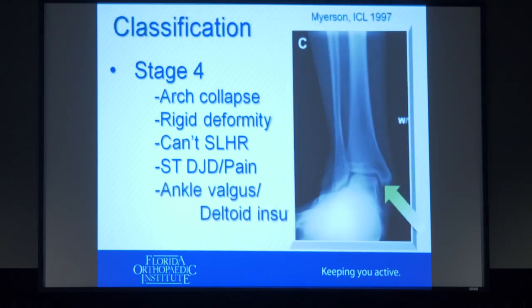Stage four is somewhat controversial — there's debate about the definition — but the important part is when it eventually puts stress on the ankle joint too, making the ankle abnormal, not just the foot. That complicates things considerably.